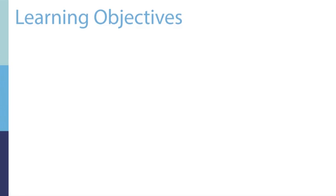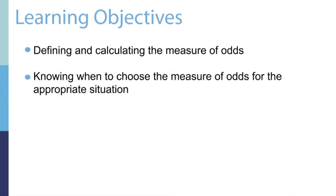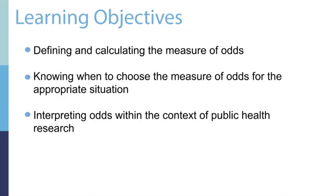In this segment, we will have the following learning objectives. They include both defining and calculating the measure of odds, knowing when to choose the measure of odds for the appropriate situation, and interpreting odds within the context of public health research.